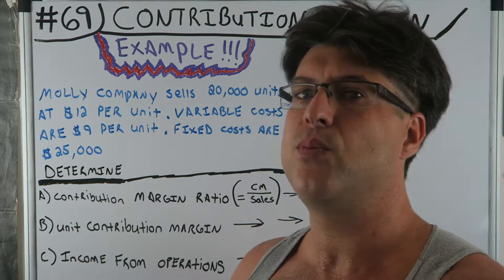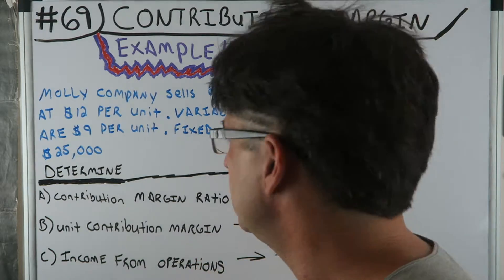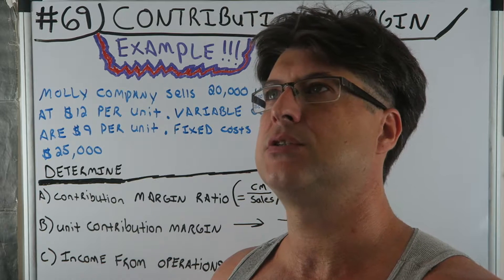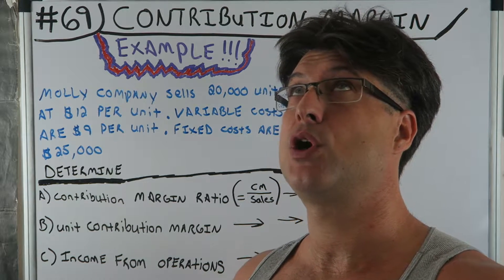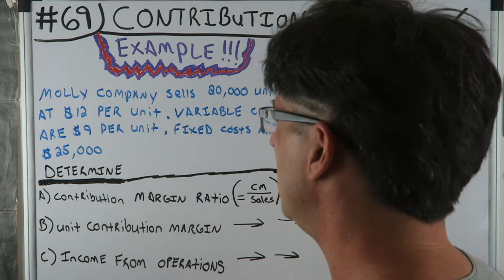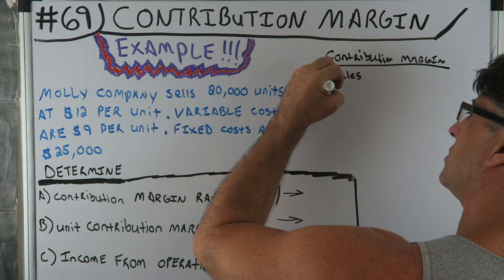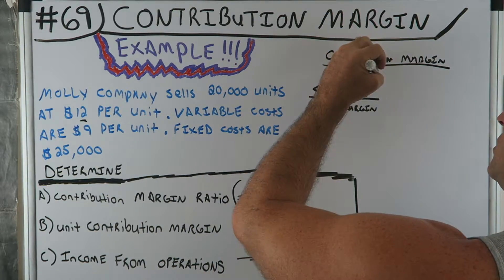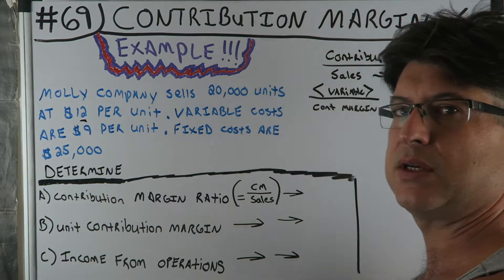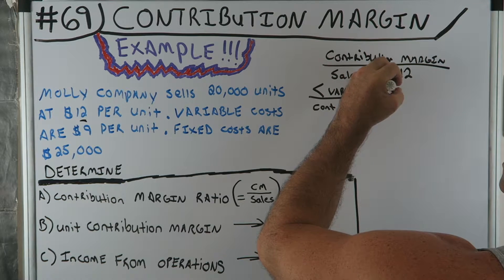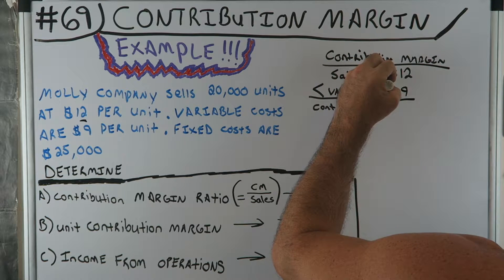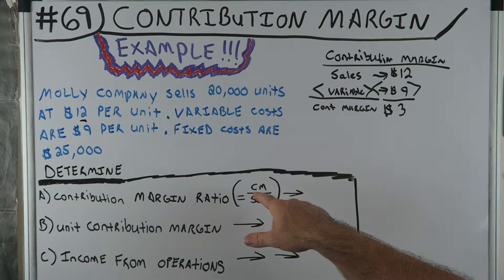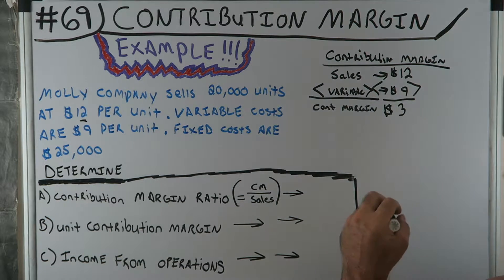I'm going to go per unit because I find that easier, then we can multiply out. So what's the contribution margin? It's sales minus variable costs per unit. Sales is $12 per unit, variable cost is $9 per unit. So $12 minus $9 — contribution margin is $3 per unit.